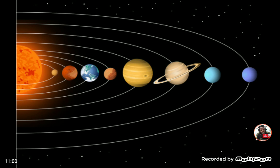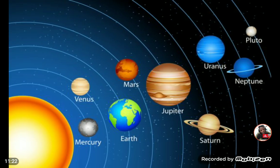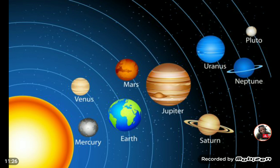The planets orbit the sun at different speeds and complete one revolution, or one planetary year, at different times. Mercury, being closer, takes only 88 days to go around the sun. The further away a planet is, the longer it takes — several years for a planet to complete one revolution or one planetary year.